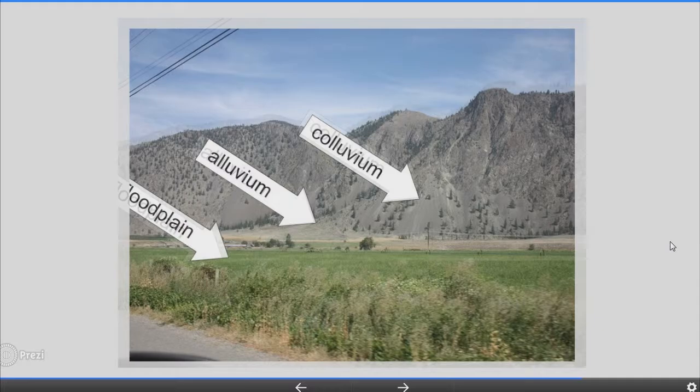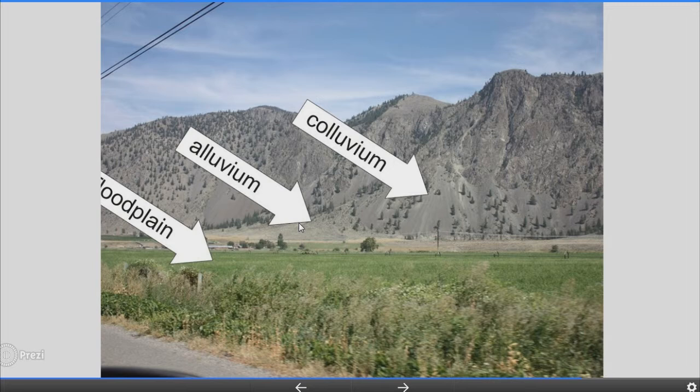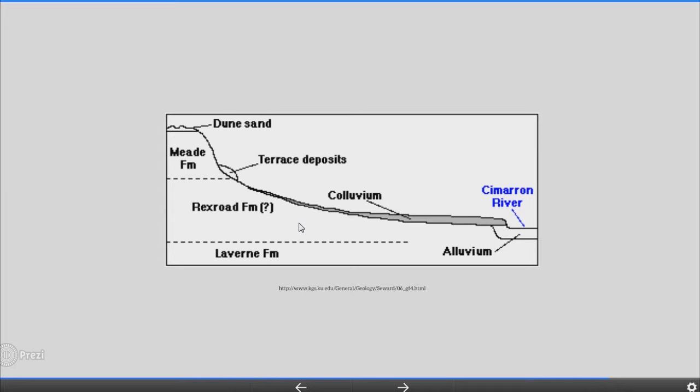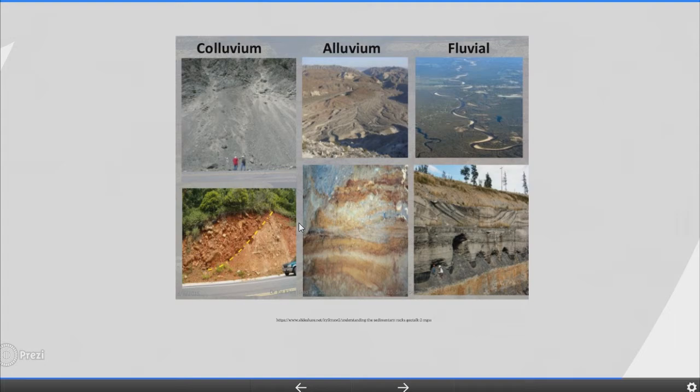Facies. In geology, facies is a distinctive group of characteristics that distinguish one group from another within a stratigraphic unit, or the general nature and appearance of sediments or sedimentary rock produced under a given set of conditions — for example, contrasting river channel facies and overbank floodplain facies in alluvial settings. Alluvium refers to unconsolidated clastic material deposited by running water, including gravel, sand, silt, clay and various mixtures. Colluvium refers to unconsolidated unsorted earth materials deposited on side slopes and at the base of slopes by mass movement and local runoff. In this picture you can see colluvium, alluvium and fluvial facies.